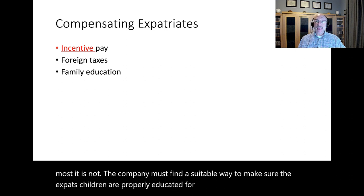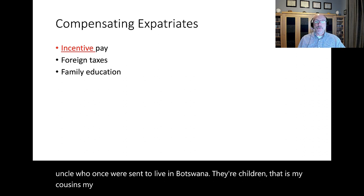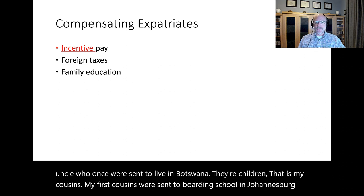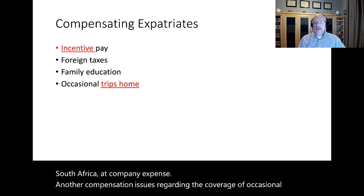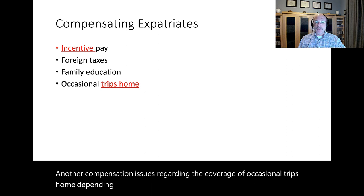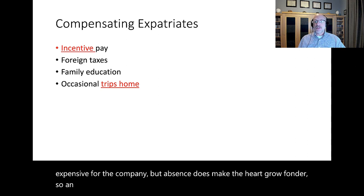In some countries the education system is better than in the U.S., but in most it is not, so the company must find a suitable way to ensure the expat's children are properly educated. For example, an aunt and uncle once sent to live in Botswana had their children sent to boarding school in Johannesburg, South Africa, at company expense. Another compensation issue involves coverage of occasional trips home — depending upon where the assignment is located, this can be very expensive, but an occasional visit home can offset culture shock in many instances.